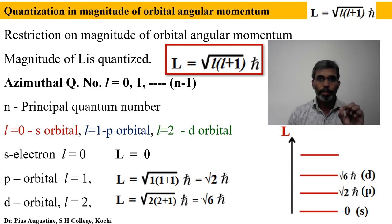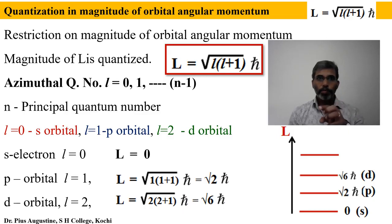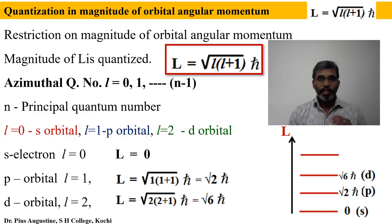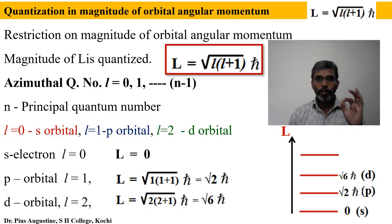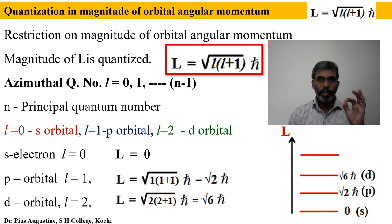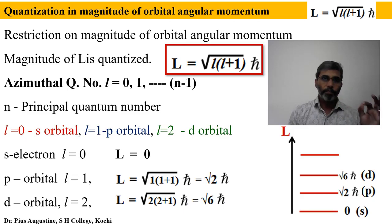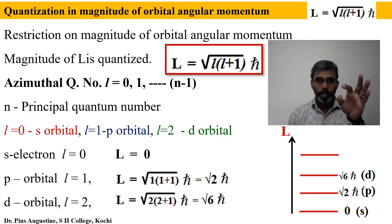In this expression, small l is called the orbital or azimuthal quantum number, which takes values 0, 1, ... up to n−1, where n is the principal quantum number (n=1 for the first orbit, n=2 for the second, and so on). The azimuthal quantum number corresponds to various orbitals: l=0 is the s orbital, l=1 is the p orbital, l=2 is the d orbital, and so on — these are the standard spectroscopic notations s, p, d, f, g, etc., also used in nuclear physics for the shell model.